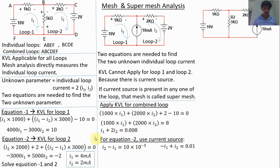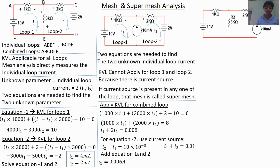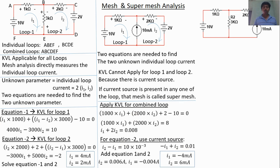Adding the two equations, I1 cancels out. We get 3·I2 = 0.018, so I2 = 6 milliampere. Substituting back, I1 = minus 4 milliampere. The final answers for Type 2 are: I1 = minus 4 milliampere and I2 = 6 milliampere.